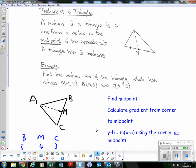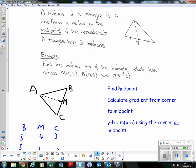Let's have a go at an example. Just to recap: find the midpoint, find the gradient from the corner to the midpoint, and substitute into y minus b equals m times x minus a, using the corner or the midpoint because they're both on the line.